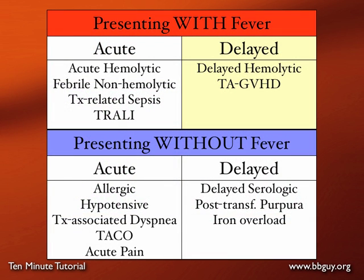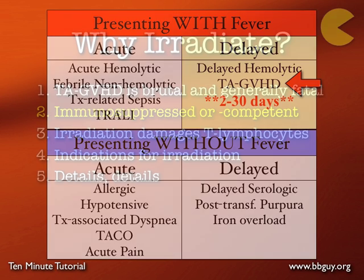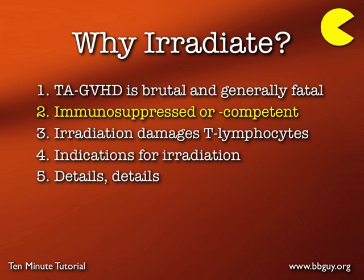TA-GvHD is a febrile delayed transfusion reaction in the classification scheme. It typically presents around 10 days post-transfusion, but anywhere between 10 and 30 days, most commonly with a fever. So you shouldn't expect to see TA-GvHD during the transfusion itself — it takes time to develop.